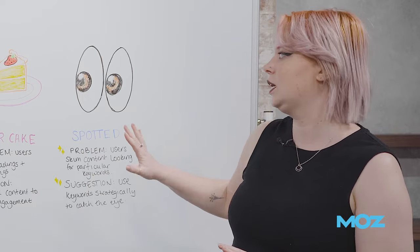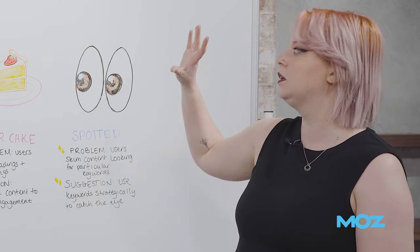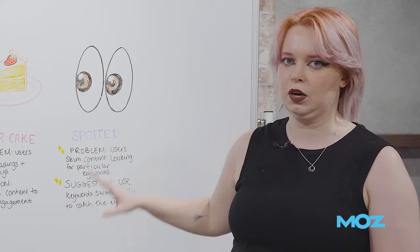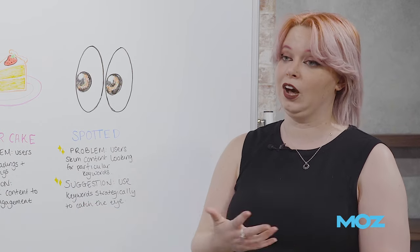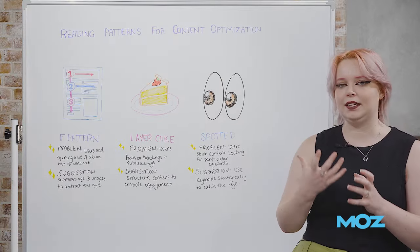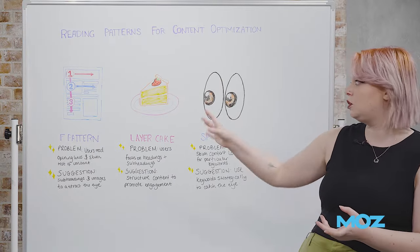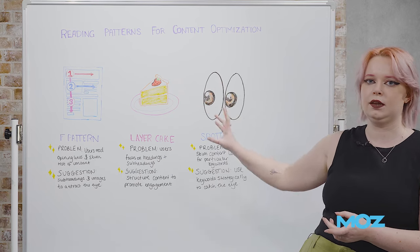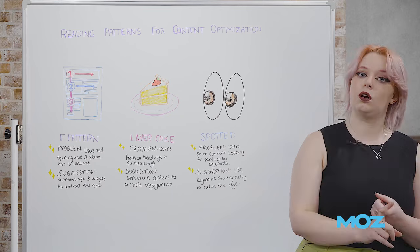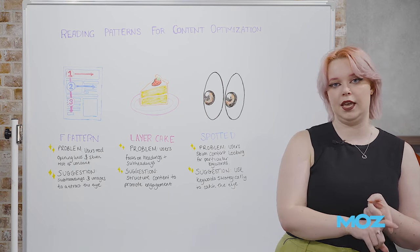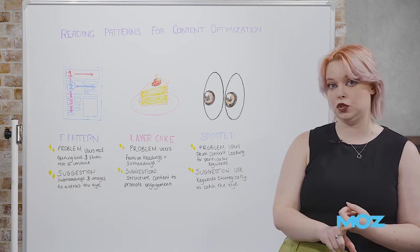Anything that catches the eye is a big thing with this — anything that promotes engagement encourages users to scroll and spend a little bit longer consuming the content you've obviously spent a lot of time creating. A good way of understanding how your users are engaging with the content to begin with is using tools like Hotjar, which has a decent heat mapping feature to understand where users are spending the majority of their time.